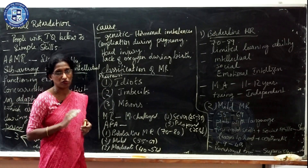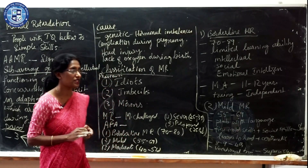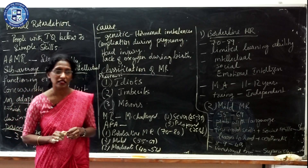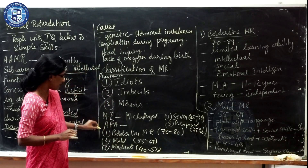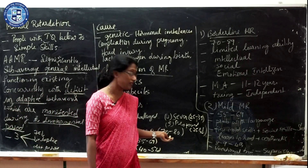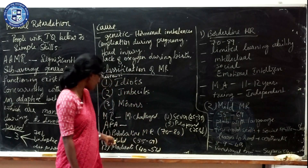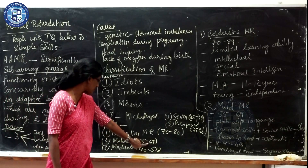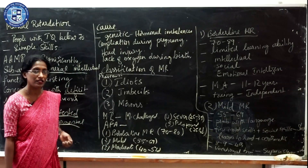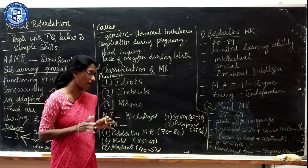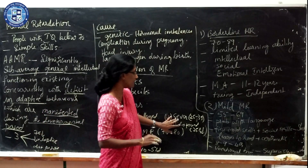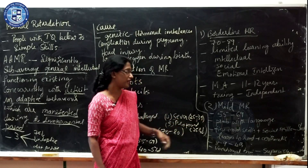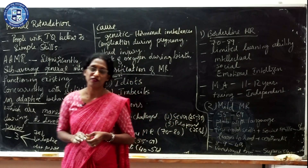The American Psychological Association has classified mental retardation into five categories: borderline mental retardation with IQ 70 to 80; mild mental retardation with IQ around 55 to 69; moderate mental retardation with IQ approximately 40 to 54; severe mental retardation with IQ around 25 to 39; and profound mental retardation with IQ 25 and below.